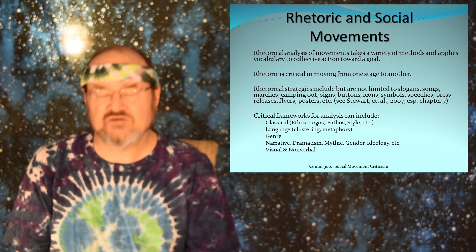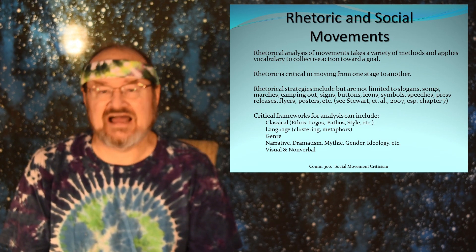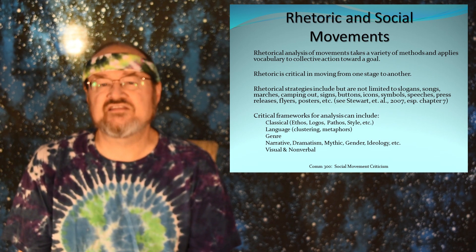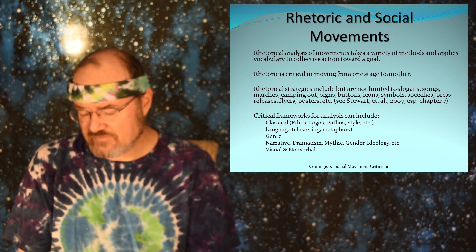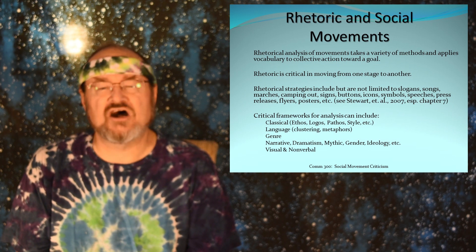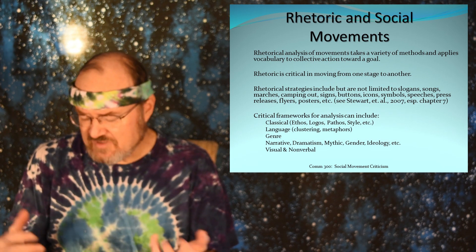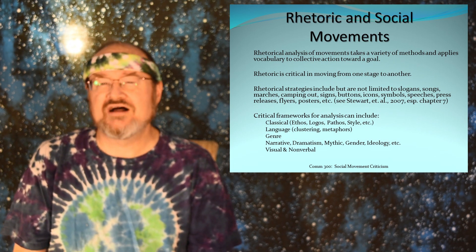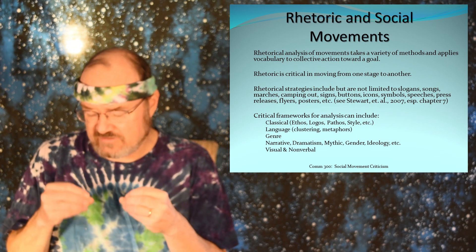When we start to analyze social movements, what perspectives do we use? Any perspective we've studied this semester. That includes classical — ethos, pathos, logos, style, and so forth. It includes language and metaphor, cluster criticism of the rhetoric of a social movement, genre, narrative, dramatism, mythic criticism, gender criticism, and ideology criticism. You can use any of those lenses to help tease out what's happening with the rhetoric in a social movement.